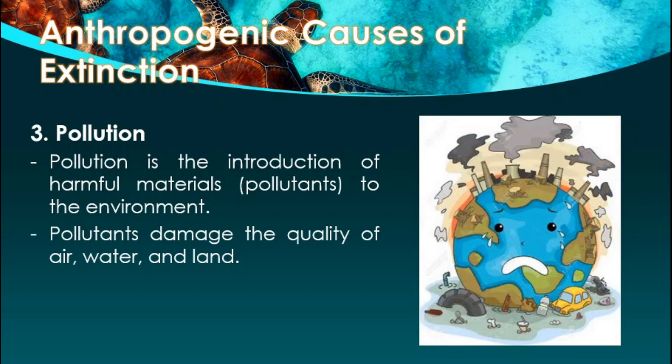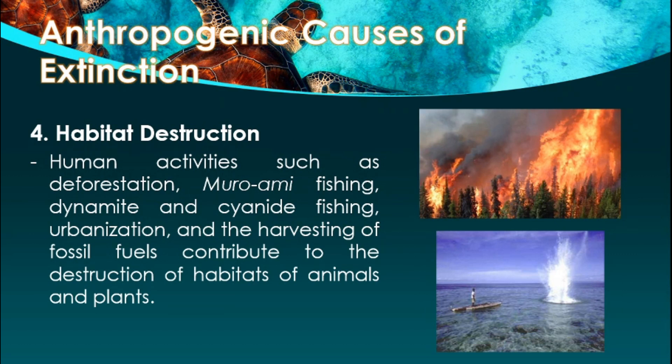The last anthropogenic cause of extinction is habitat destruction. Human activities such as deforestation, muro-ami fishing, dynamite and cyanide fishing, urbanization, and the harvesting of fossil fuels contribute to the destruction of habitats of animals and plants. Since habitats are where animals get their food, once these habitats are destroyed, species will no longer be able to live and survive.